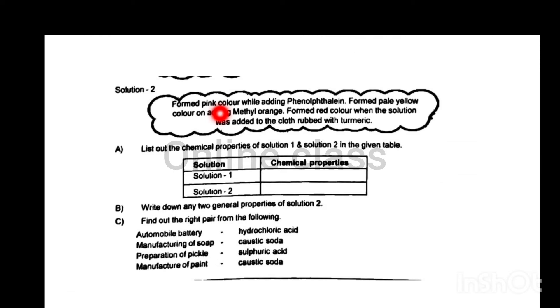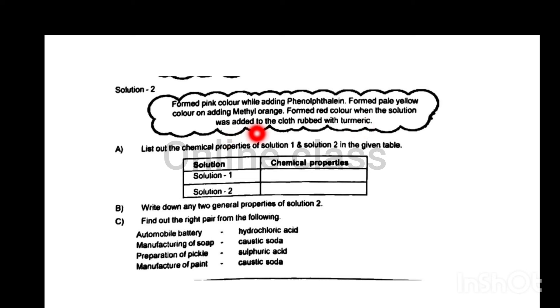Phenolphthalein formed a pink color when added. Methyl orange formed a pale yellow color when added. A red color was observed when added to the cloth.